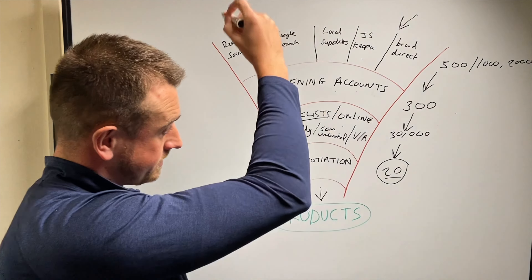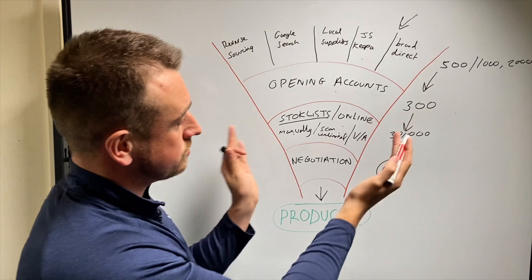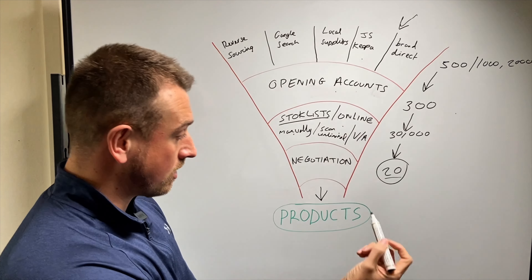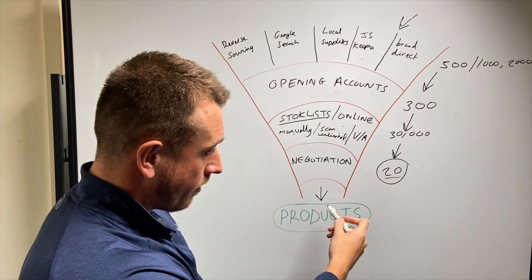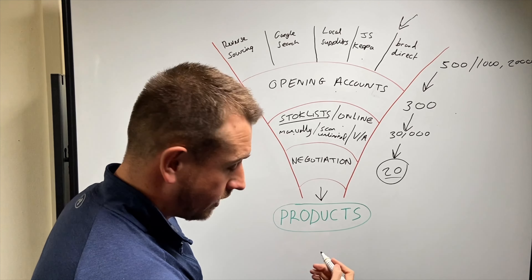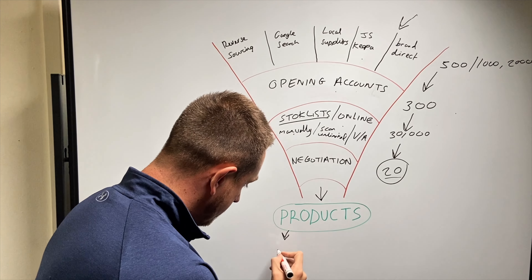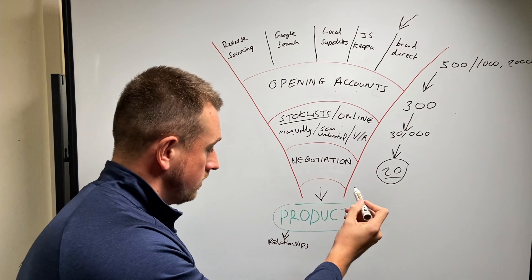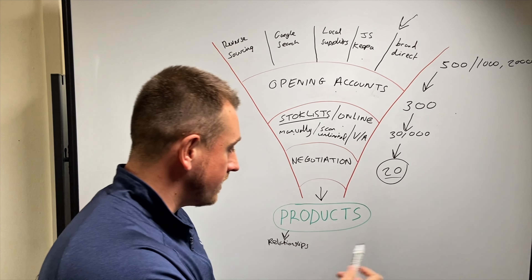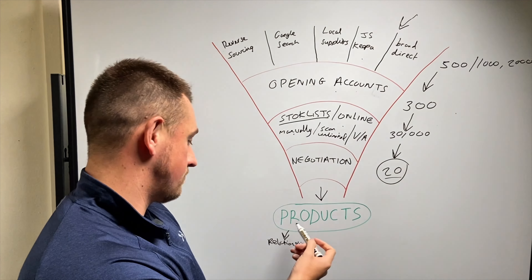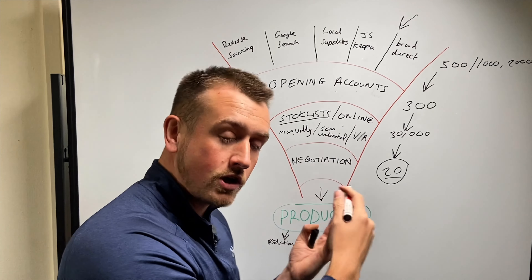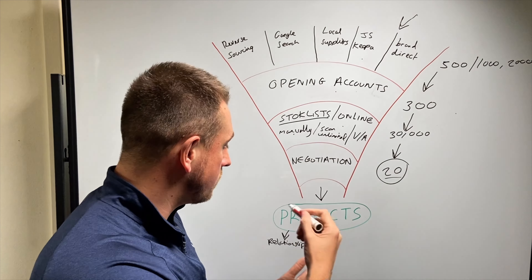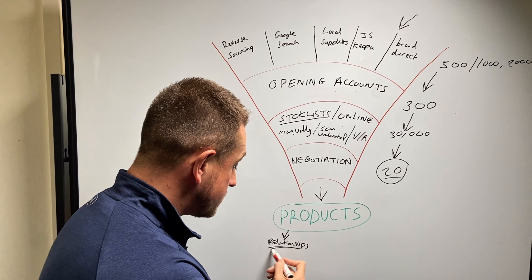This doesn't just end here — this is obviously where you start, what you start doing. But over time you have to do this less and less, because once you've found these products, once you've ordered from a supplier, you start building relationships. When you buy from a supplier, maybe the first time you couldn't negotiate as much, but you've still made an order. You're still in contact with that supplier, with that sales rep. So now you're starting to build a relationship.